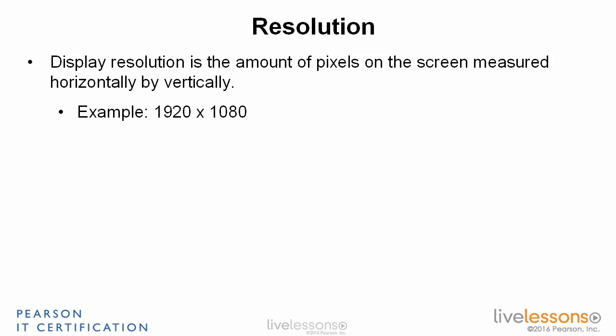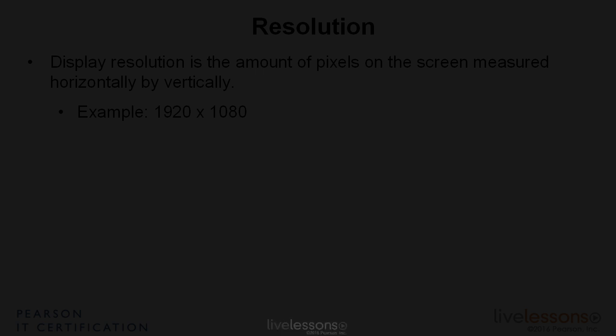A lot of televisions use that resolution and you'll see it in many videos. But if you're working on a computer, you might use a slightly different resolution such as 1920 by 1200, which uses a different aspect ratio. You can view this in Windows and make modifications if you wish.